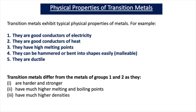Let's start by looking at the physical properties of transition metals. Transition metals exhibit typical physical properties of metals. For example, they're good conductors of both electricity and heat. They have high melting points. They're malleable, which means they can be hammered or bent into shapes easily. They're ductile, which means they can be drawn into wires. Transition metals differ from the metals of groups one and two as they're harder and stronger, have much higher melting points and boiling points, and much higher densities.